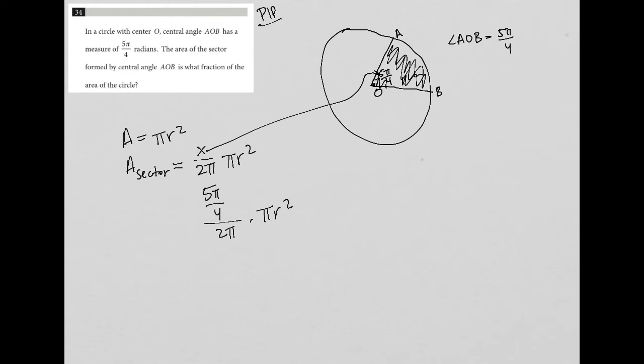The area of the sector is what fraction of the area of the circle? So I'm going to take all this—this becomes the numerator. Because it says the fraction of the area of the circle, that means πr² goes down below.